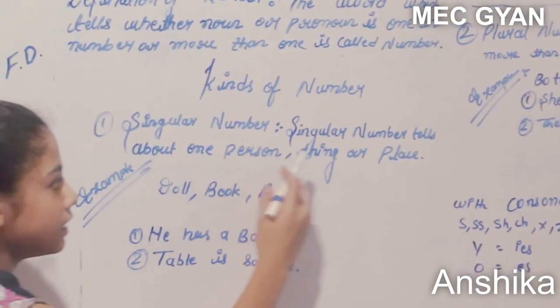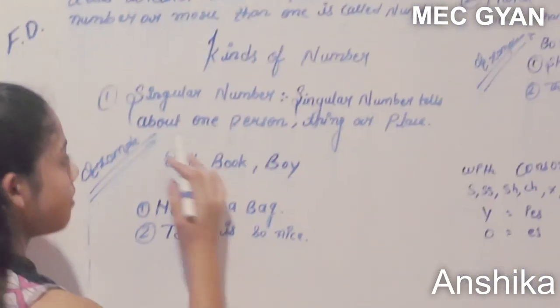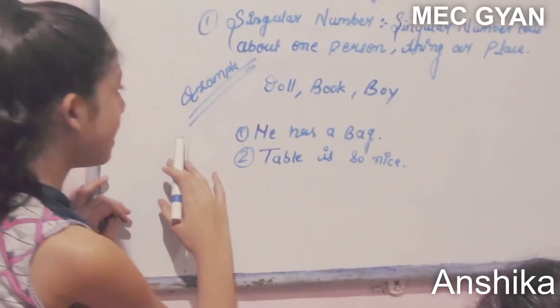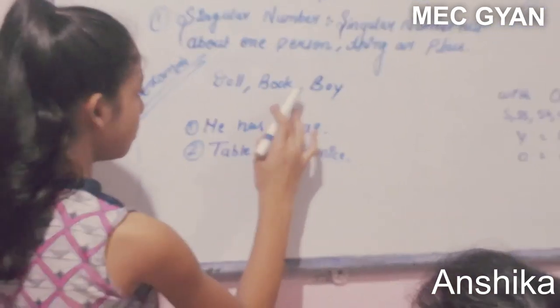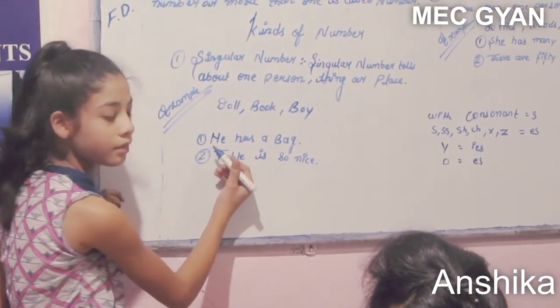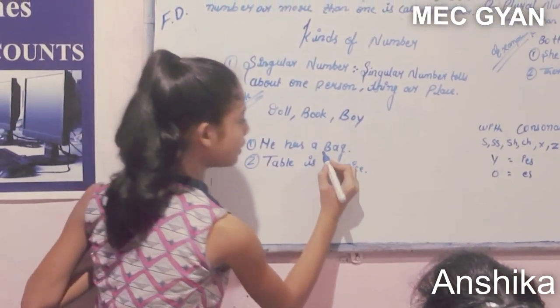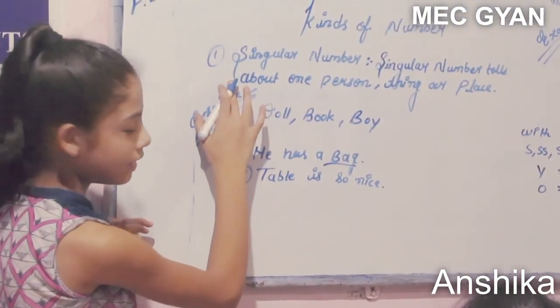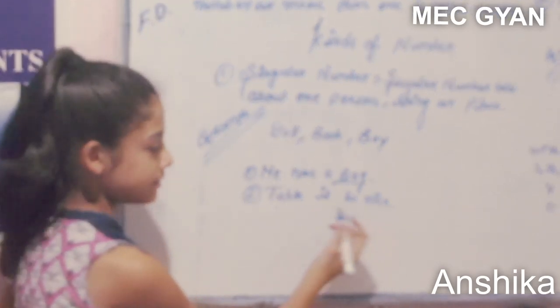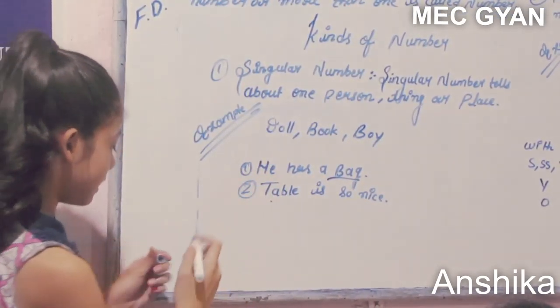Singular number: Singular number tells about one person. Examples: doll, book, boy. He has a bag. Here, bag is singular, and table is singular.